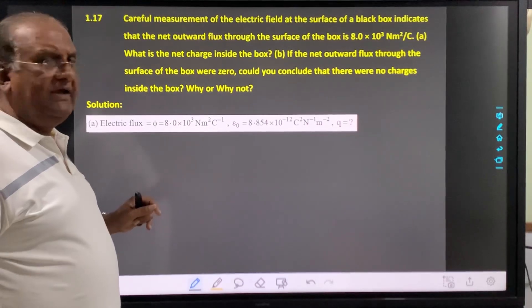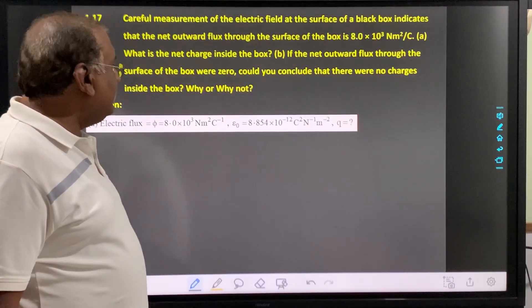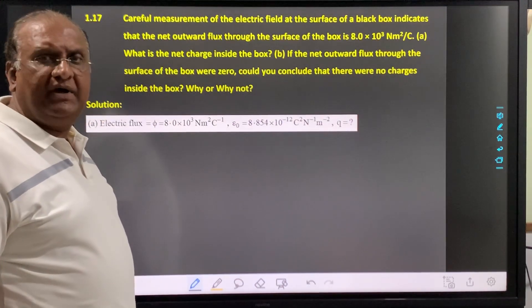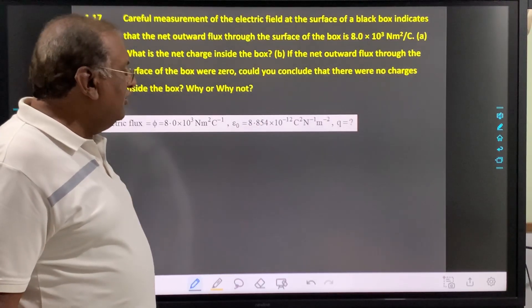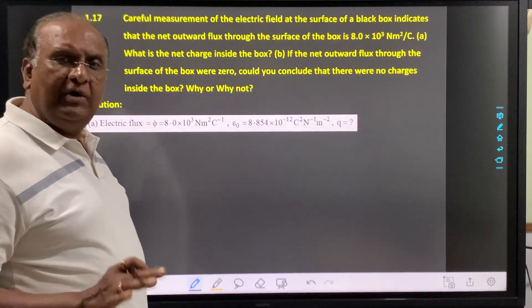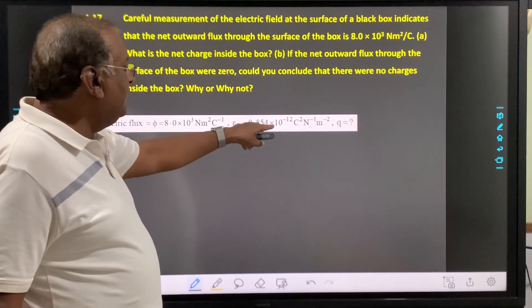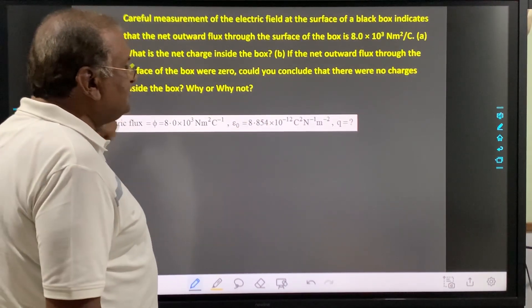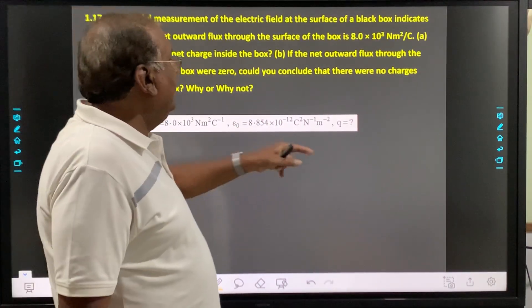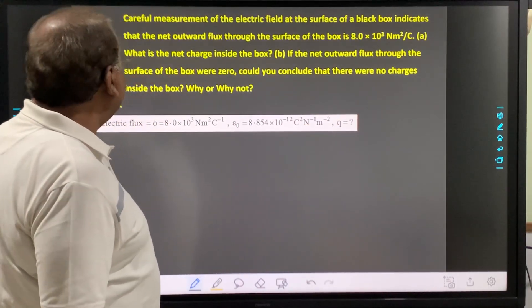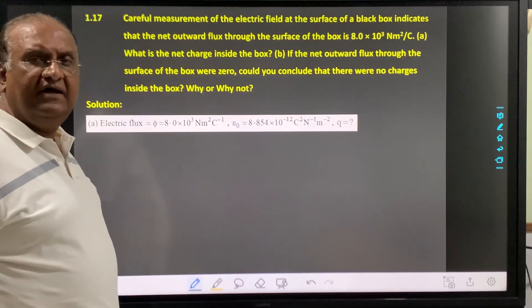The electric flux has been given as 8 × 10³ newton meter square per coulomb. Epsilon 0 is a constant with the value of 8.854 × 10⁻¹² coulomb square per newton meter square. We want to find the charge Q inside the box.